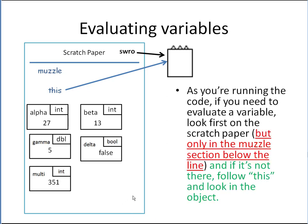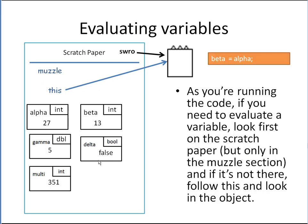When you're running the code and need to evaluate a variable, you look on the scratch paper — just like we did with alpha and beta — but you're only going to look in this muzzle section. You can't look above or below it. While we're running the muzzle method, the only boxes we're allowed to look at are the ones in our local space. If we can't find one there, then we follow 'this'.